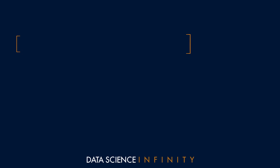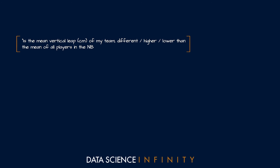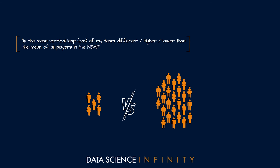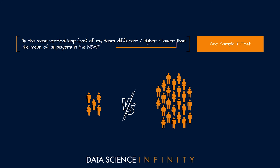The first question you might ask is: is the mean vertical leap of my team different, higher or lower, than the mean of all players in the NBA? Here, because we're comparing a sample — our team — to the population it comes from — all players in the league — we would utilize a test called a one-sample t-test. In practice, we'd need to specify exactly which comparison we wanted and adapt the test accordingly.